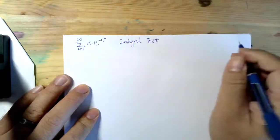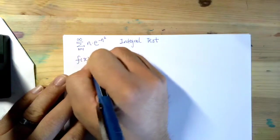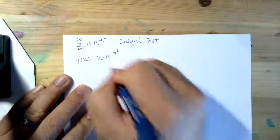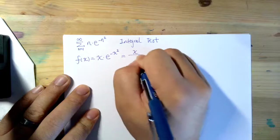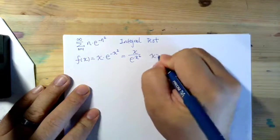So correspondingly, the function here is going to be x times e to the power of negative x squared. And we can even write it as x over e to the power of x squared, and x is greater or equal than 1.